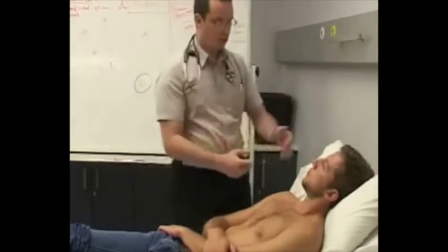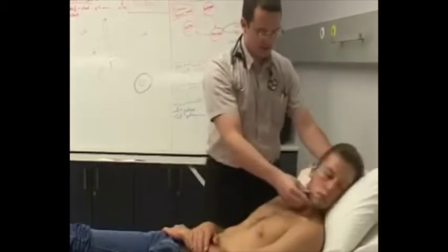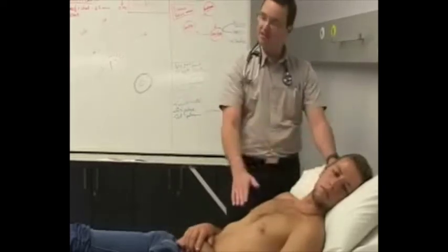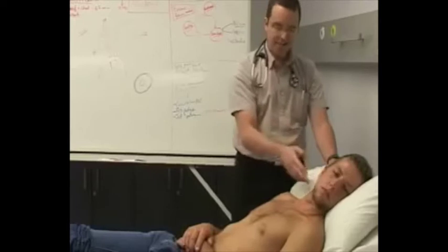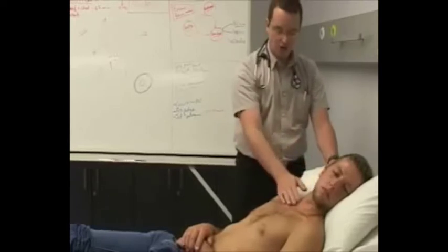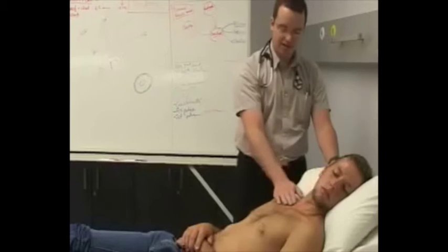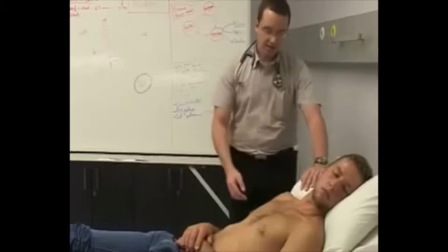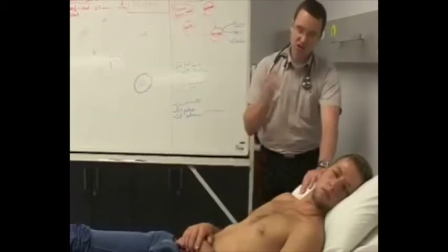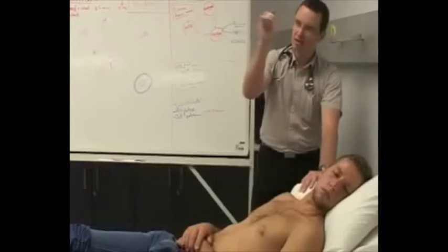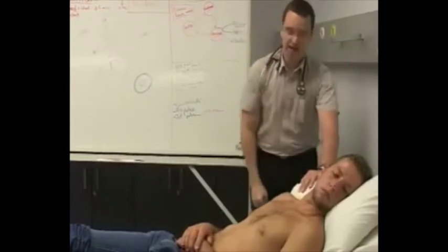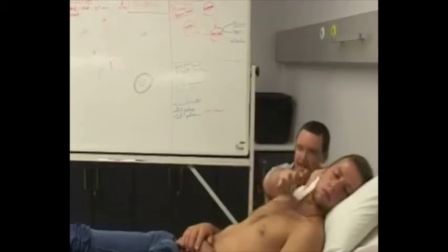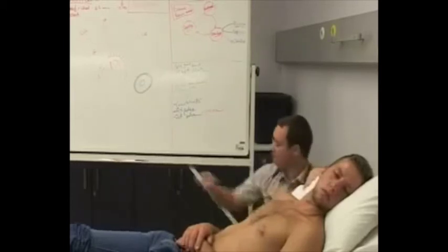How do we do the JVP? First, we ask the patient to keep their head straight and look toward the left, making sure the patient's chest, neck, and head are in an aligned fashion, and the neck must be relaxed — you can't have a tensed sternocleidomastoid muscle. A well-positioned pillow is important. I position myself next to the patient's head, looking across the neck to try and see where the JVP is.